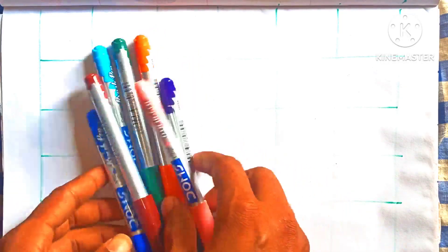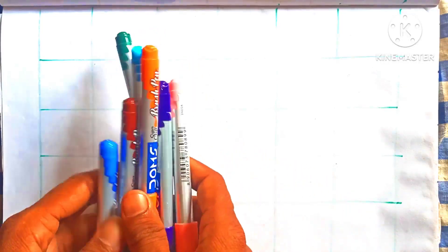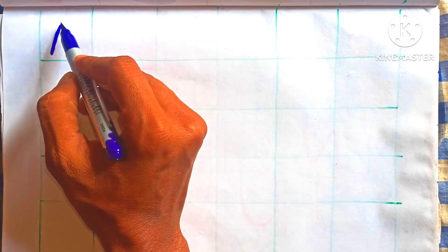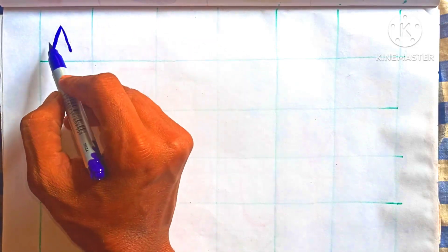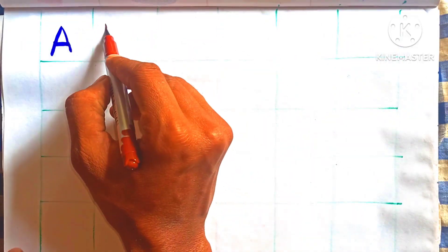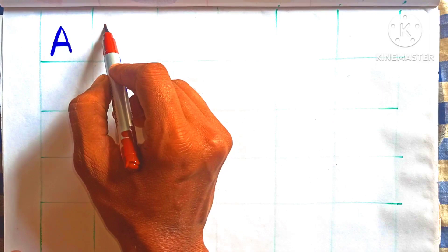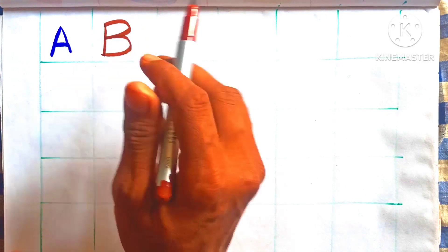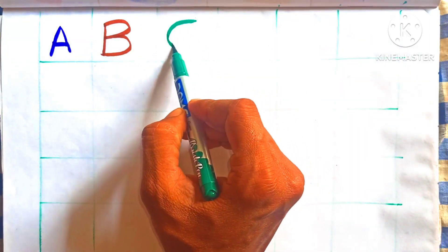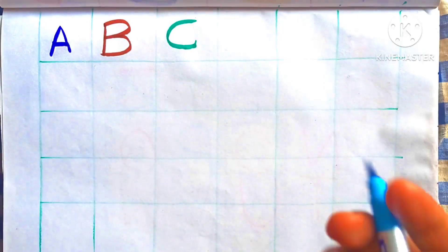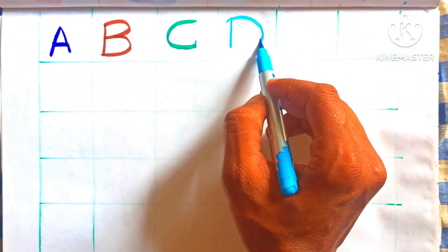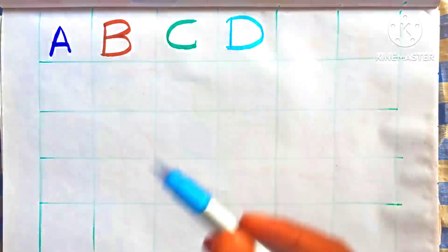Hello, welcome to our channel. A, A for apple. B, B for ball. C, C for cat. D, D for dog. E, E for elephant. F, F for face. G, G for good. H, H for hand.